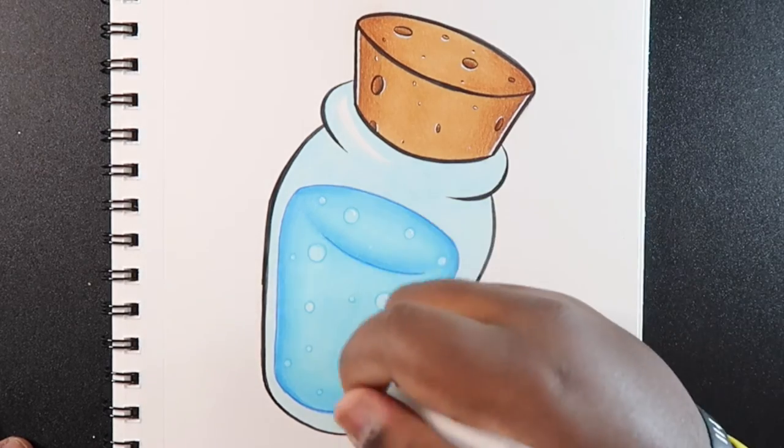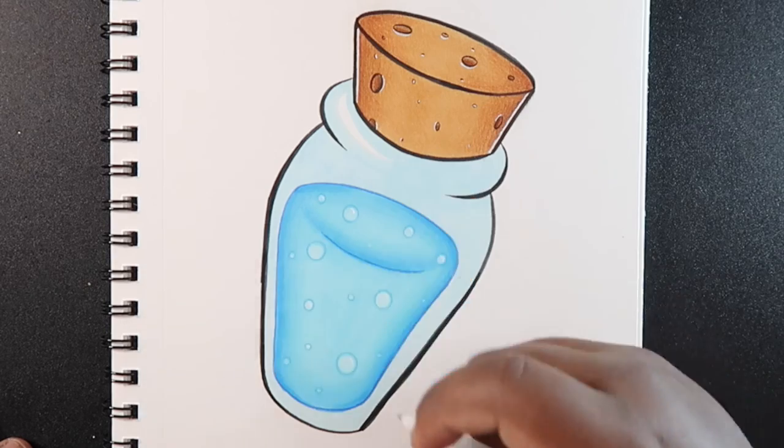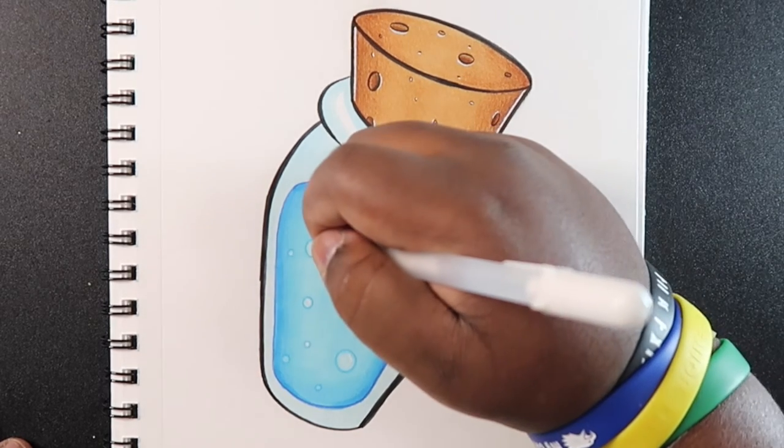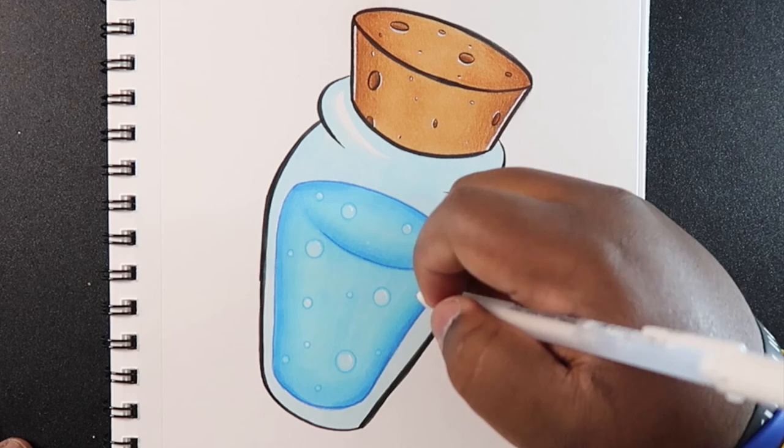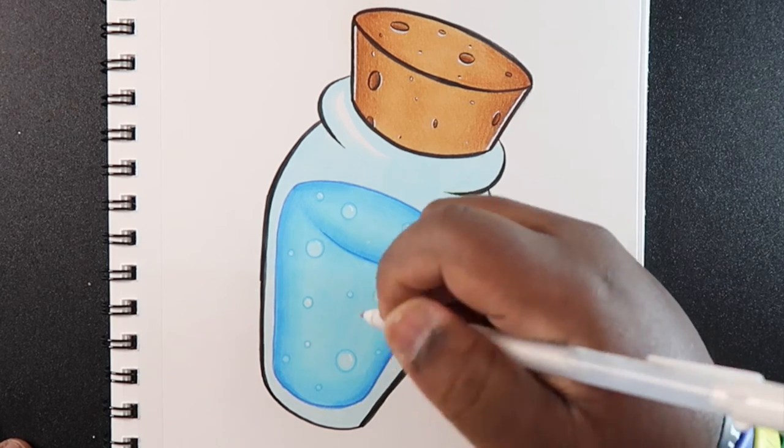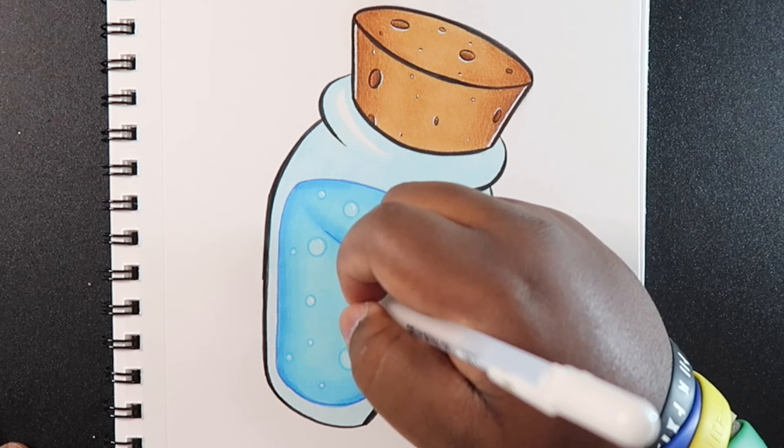And then for the bigger bubbles, large in size compared to the others, like these few here, you can add a few other lines to it or a line and a dot, like a curved exclamation point. And then for the really small ones, you can add a dot to it. It's going to be hard to make that same exclamation point shape on the smaller bubbles.